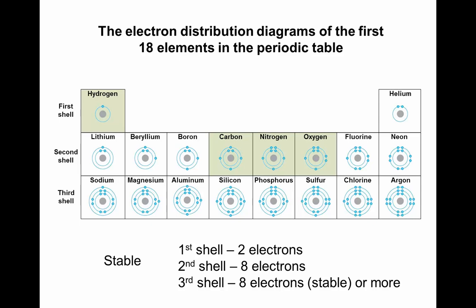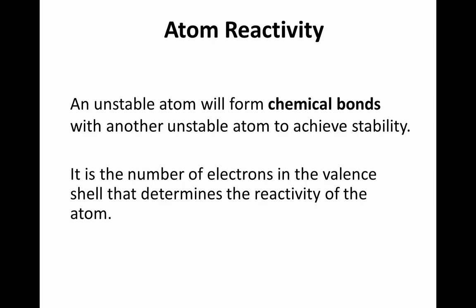Neon, having two electrons in the first shell and eight electrons in its valence shell, is stable. Unstable atoms such as hydrogen and carbon will want to form chemical bonds with other unstable atoms in order to achieve stability. Therefore, it is the number of electrons in the valence shell that will determine the reactivity of the atom.